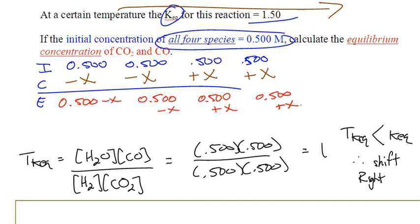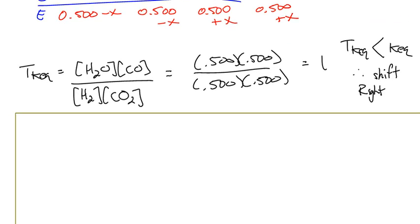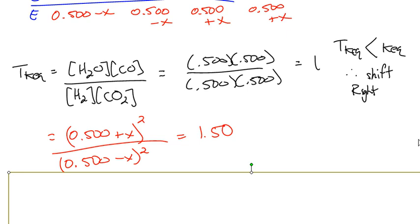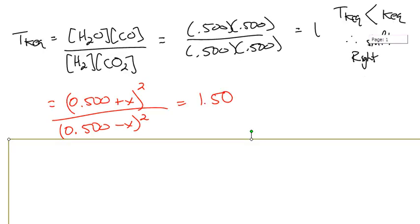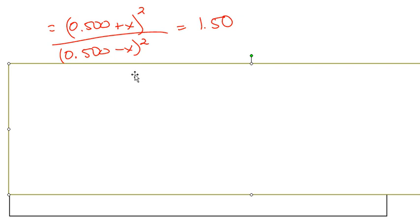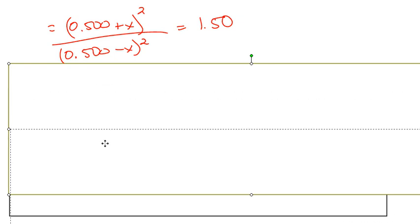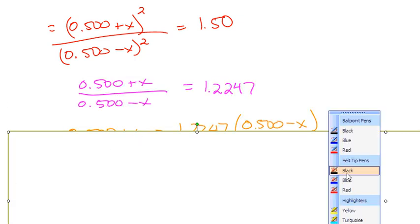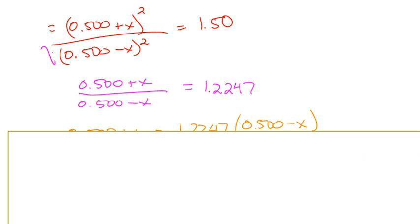We need to solve for x. We can plug those equilibrium expressions into the Keq expression. Products over reactants: (0.500 + x) squared over (0.500 − x) squared equals 1.5. You will not be asked to use the quadratic formula, so the first step is to square root both sides. When you square root both sides you cancel the exponents, and the square root of 1.5 is 1.2247.